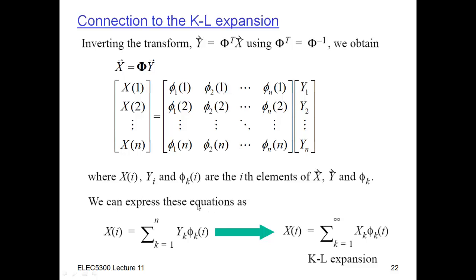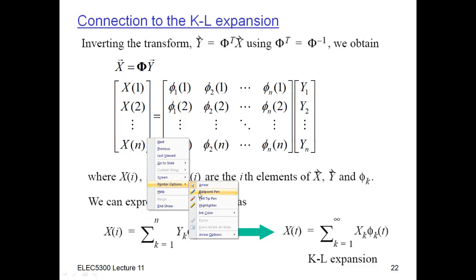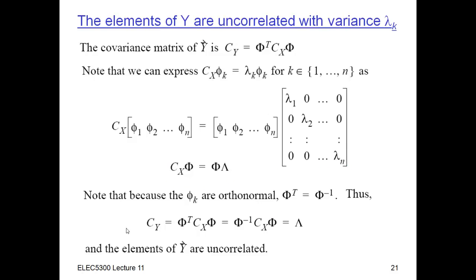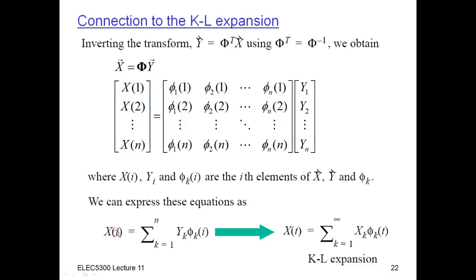Now if we take this equation and simply replace the index i by t, and replace the finite sum N by infinity, we get exactly the Karhunen-Loève expansion equation. That's the relationship between the finite vector case and the Karhunen-Loève expansion.